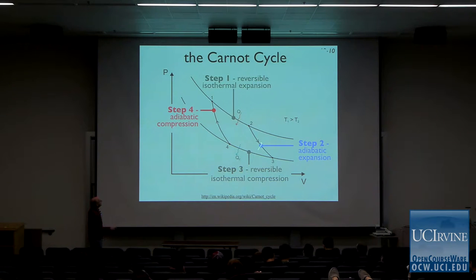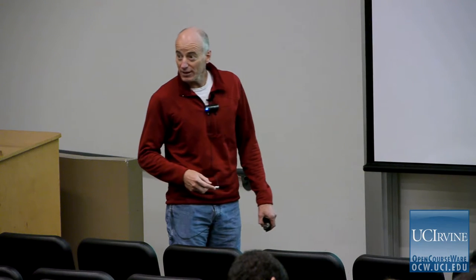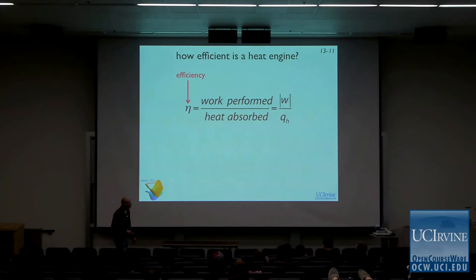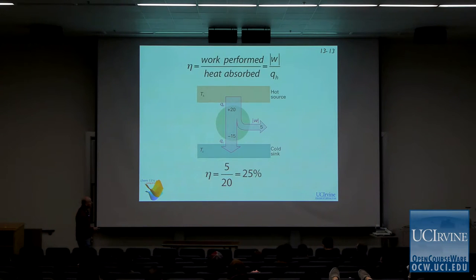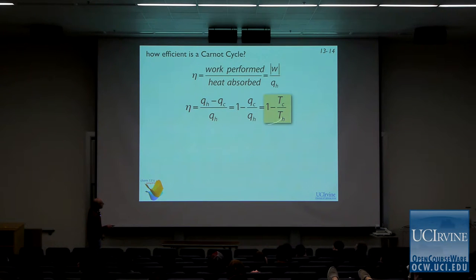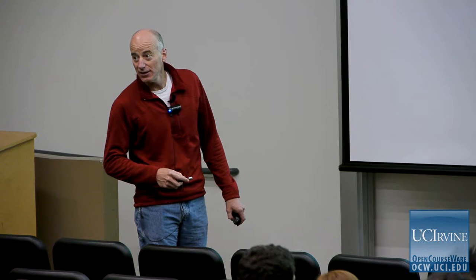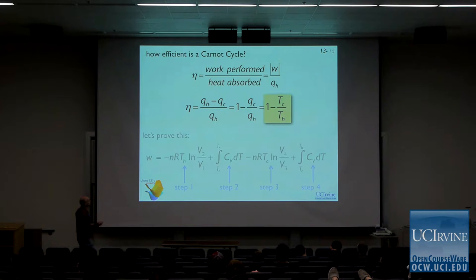How efficient is the heat engine? The efficiency is the work that we get out divided by the heat that's absorbed from the hot reservoir — that's how the efficiency is defined. In this case it would be 5 over 20. We can derive an expression for this efficiency: 1 minus the temperature of the cold reservoir divided by the temperature of the hot reservoir. Where did we get that equation? Can we derive it?